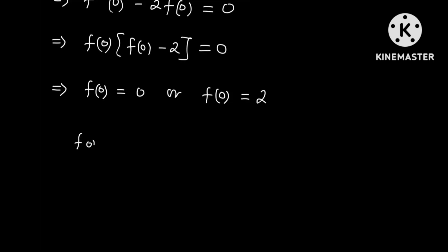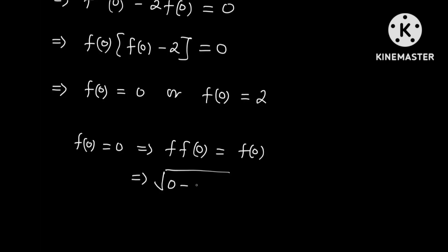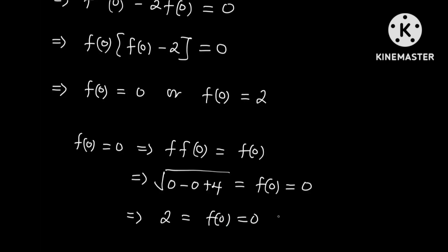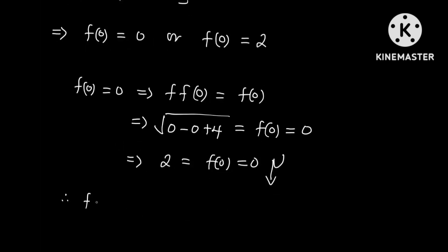But if f of 0 is equal to 0, then applying f to both sides of f of f of 0 equals 2, this implies the square root of 0 minus 0 plus 4 is equal to f of 0, which gives 2 equals 0 — a contradiction. Therefore f of 0 is not equal to 0, and so we can conclude that f of 0 is equal to 2.